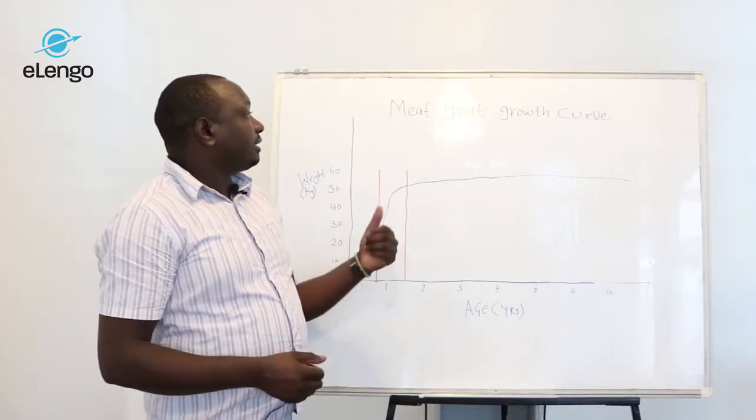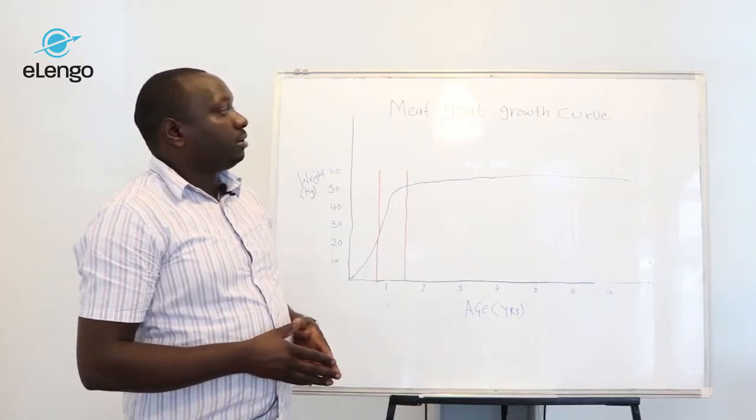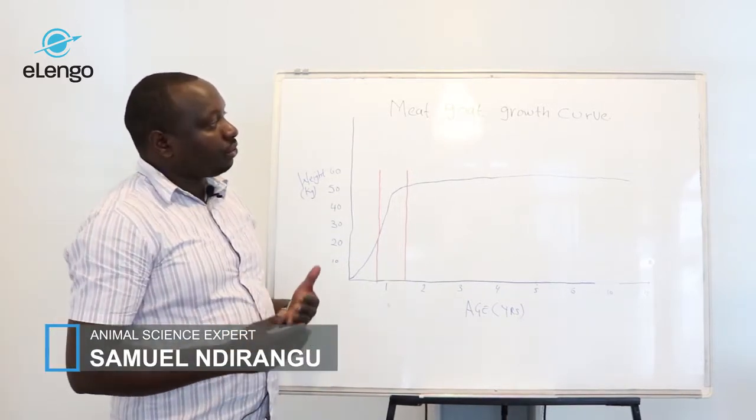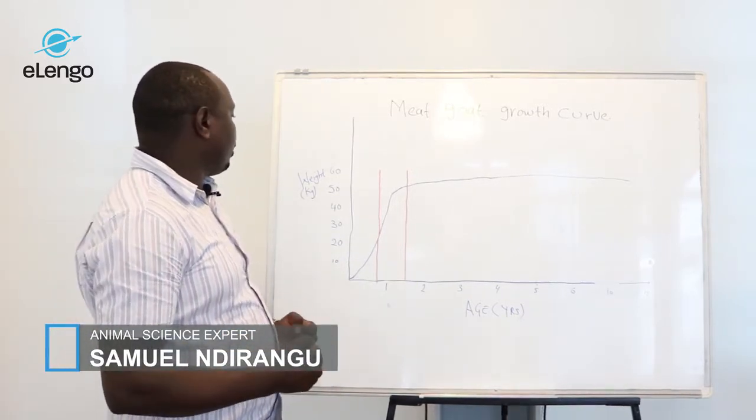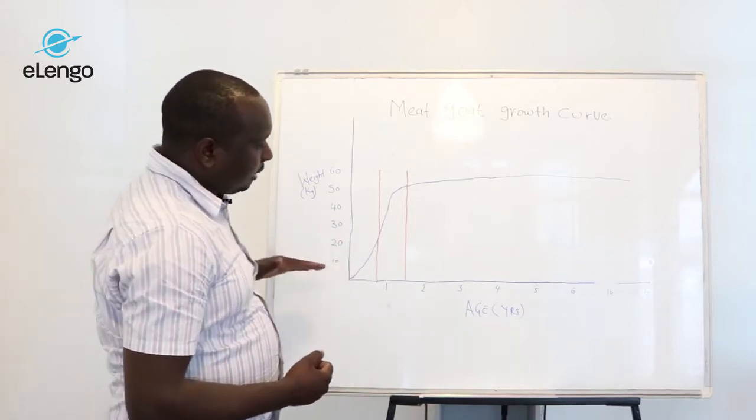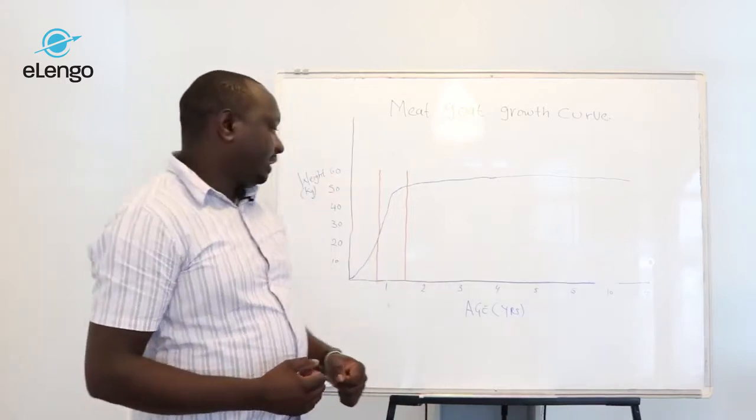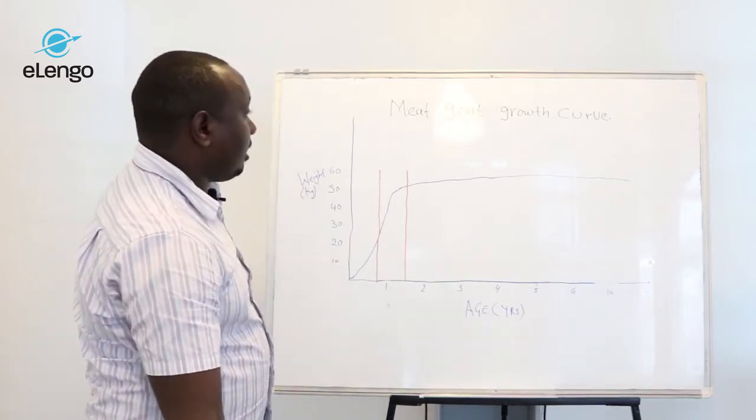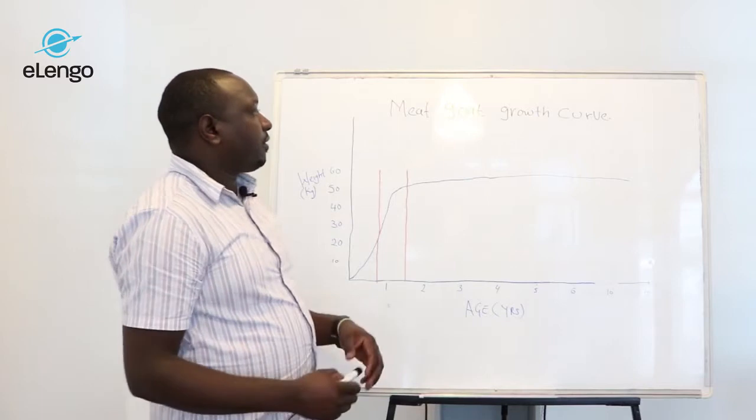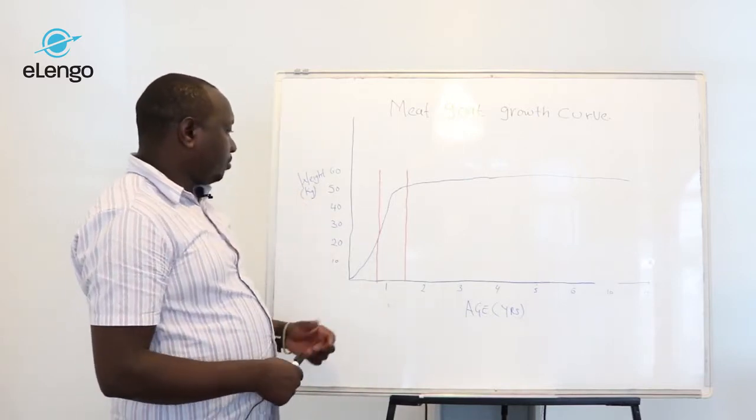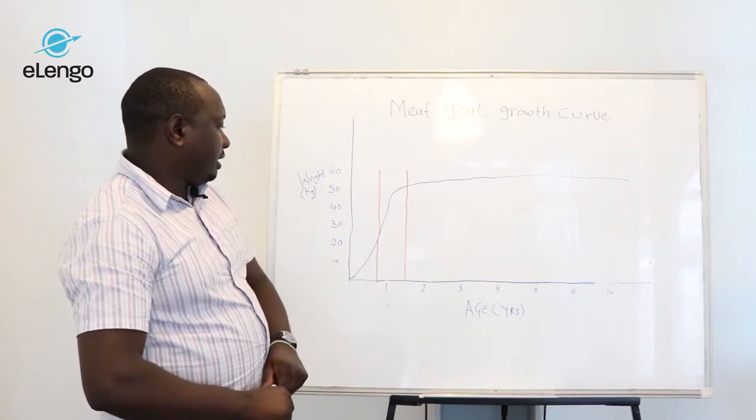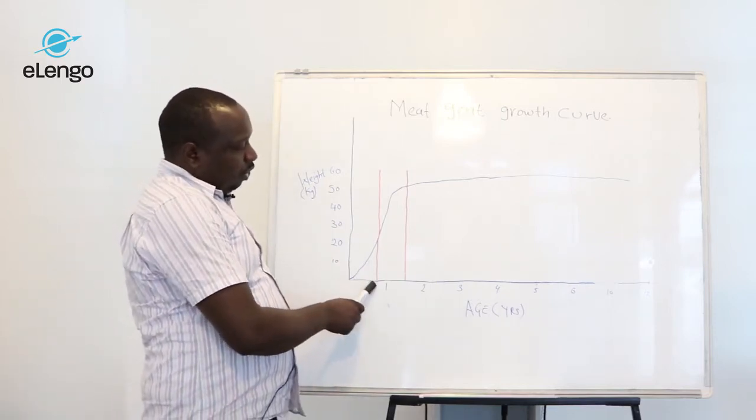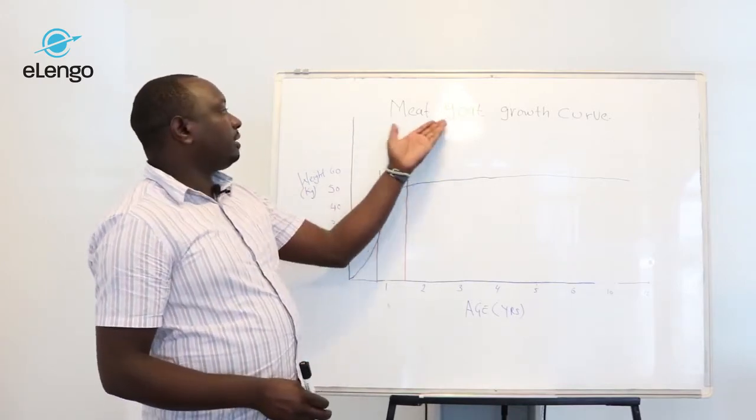In our next section, we are going to look at the meat goat growth curve and how their growth in terms of stature and weight increment against time in years. We realize that like any other normal growth curve, this one assumes the sigmoid curve, whereby the first one and a half years of the meat goat is where we have exponential weight gain.